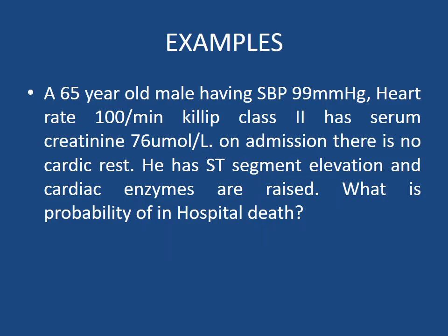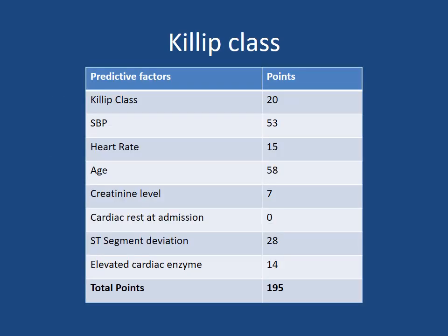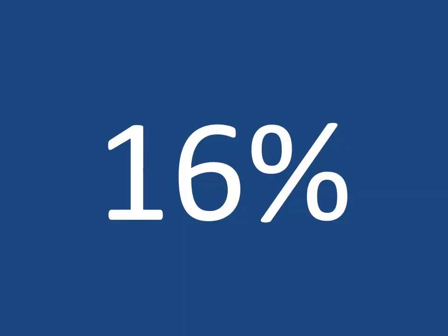Example GRACE score calculation: 65-year-old male with systolic BP 99 mmHg, heart rate 100 per minute, Killip class 2, serum creatinine 76 micromol/L, no cardiac arrest on admission, ST segment elevation present, and elevated cardiac enzymes. After adding all the respective points, the total score is 195, giving a probability of in-hospital death of 16%.